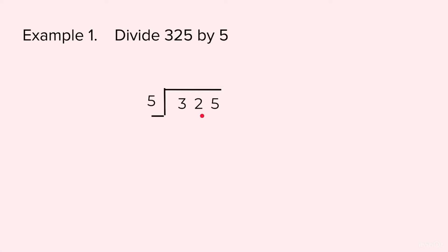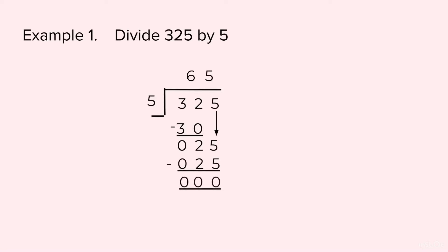Now we will take 32, and then we will check how many times does 5 go in 32. 5 sixes are 30, so we will write 6 on top, 30 at the bottom. Subtract — we are left with 2. Then we will bring 5 down. 5 fives are 25, so 5 at the top, 25 at the bottom.